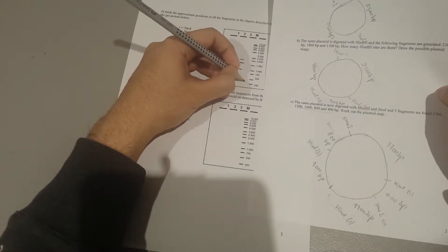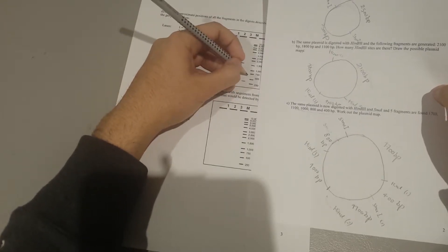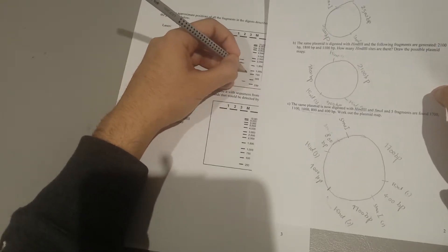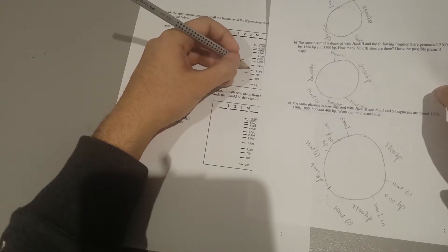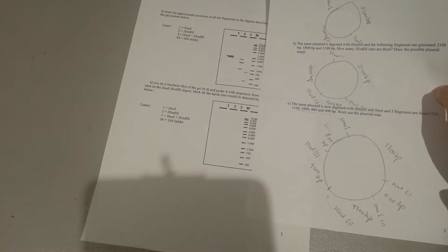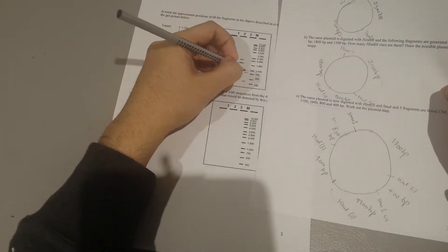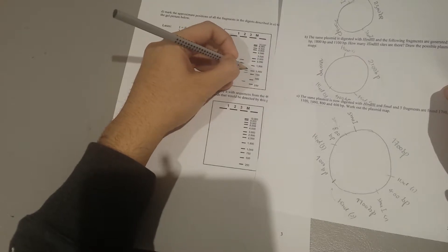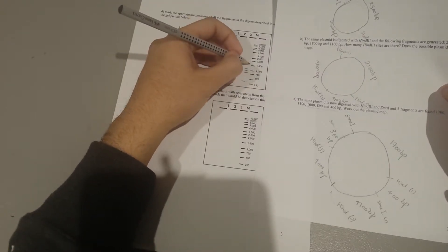So 400, we had 800 like that. We had 1K which should be here. We had 1100 here and we had 1700 which was almost here.